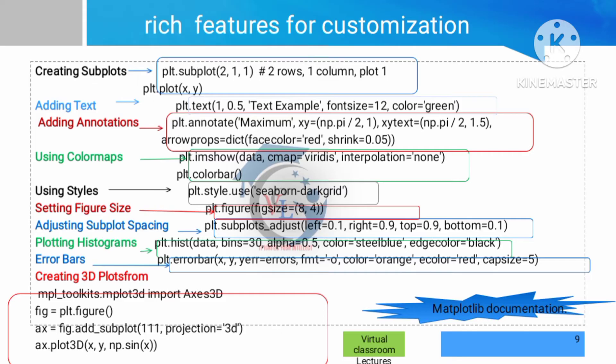Next, we look at subplots — one figure with three plots using plt.subplot(). We can also add text to the figure using plt.text(). We can set the font size of the text. We will also look at annotations, which allow us to point out a specific area of the plot, specifying the color, size, and pointer location.